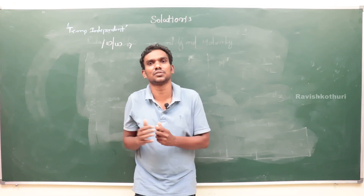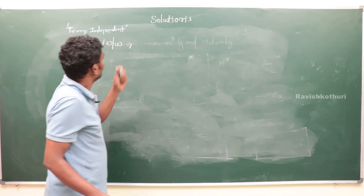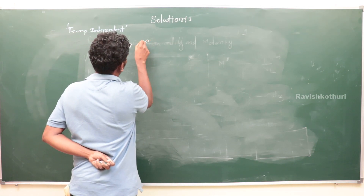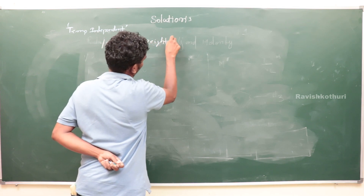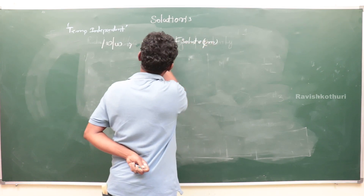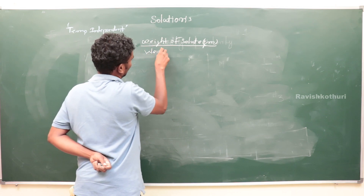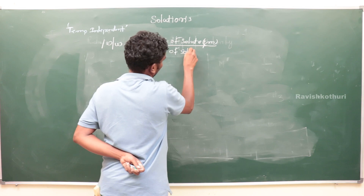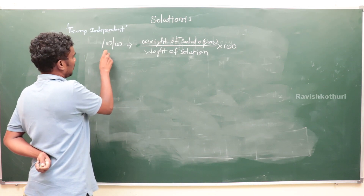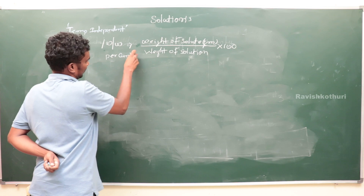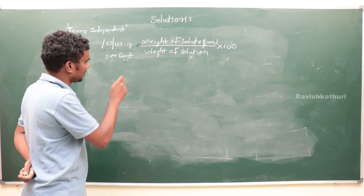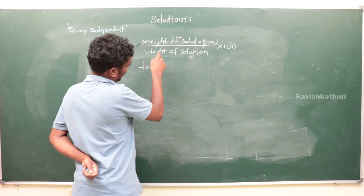Weight by weight percentage means: the weight of solute present in 100 grams of solution. According to the mathematical expression: weight of solute in grams divided by weight of solution, multiplied by 100. Since volume is not included, this is temperature independent.